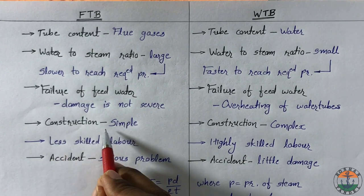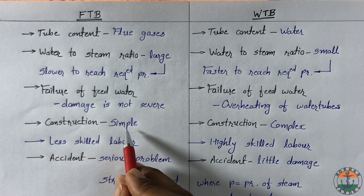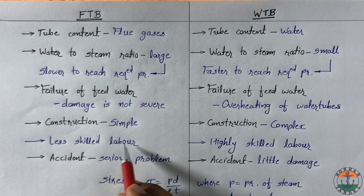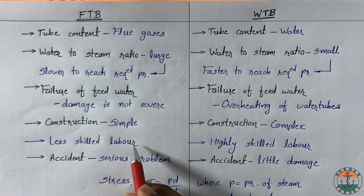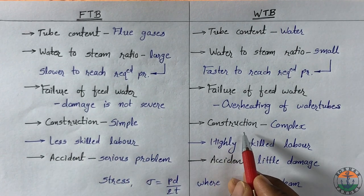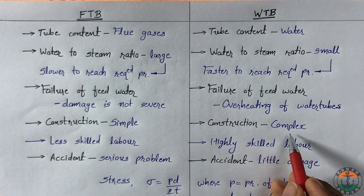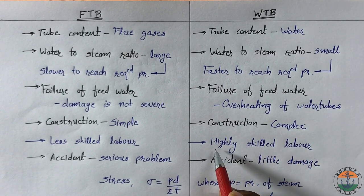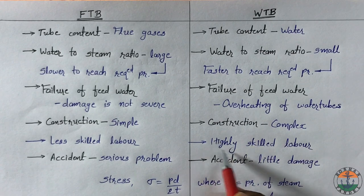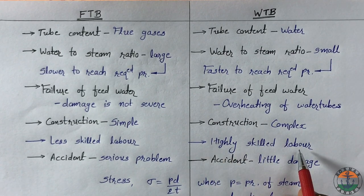Construction of fire tube boiler is simple. So less skilled labor is required for its operation. Construction of water tube boiler is very complex. So it requires skilled labor for its efficient operation.